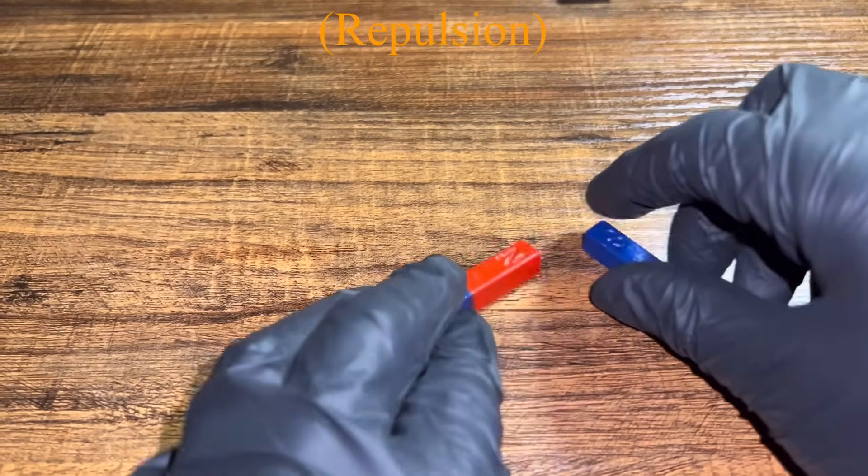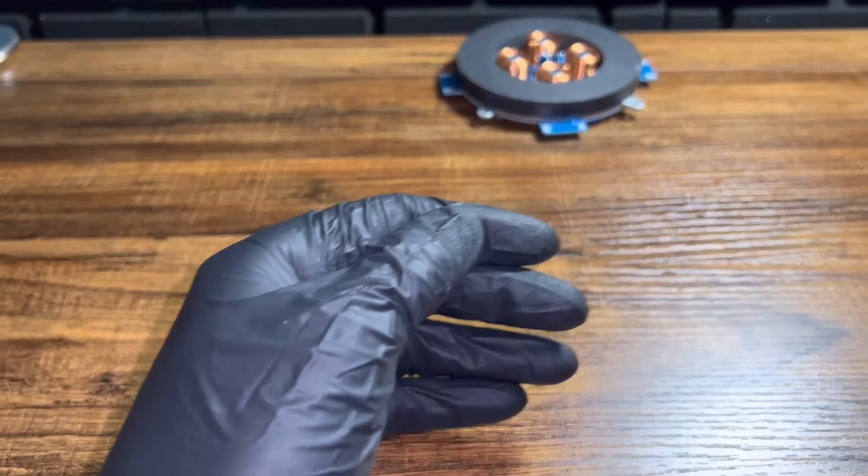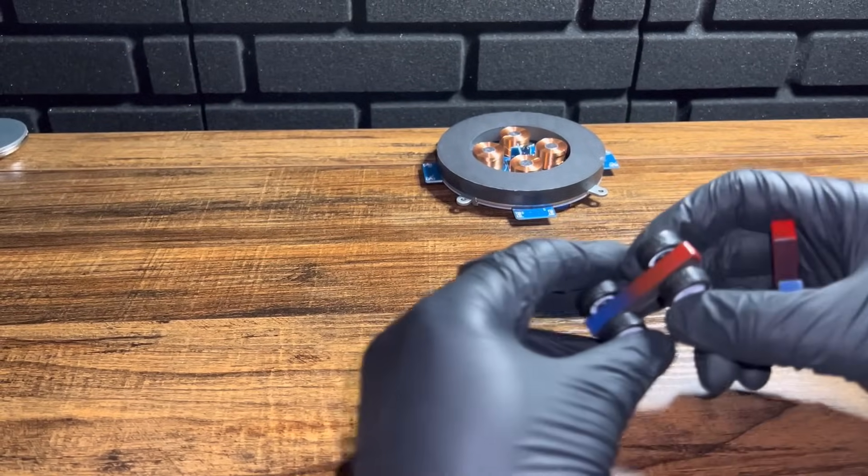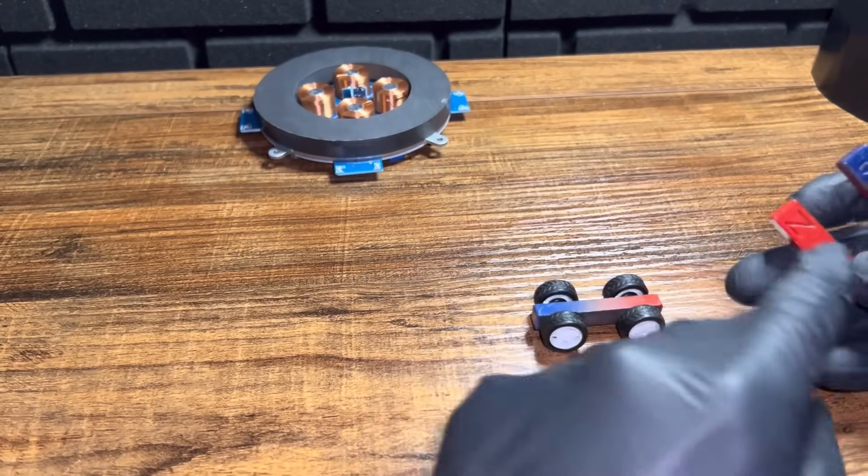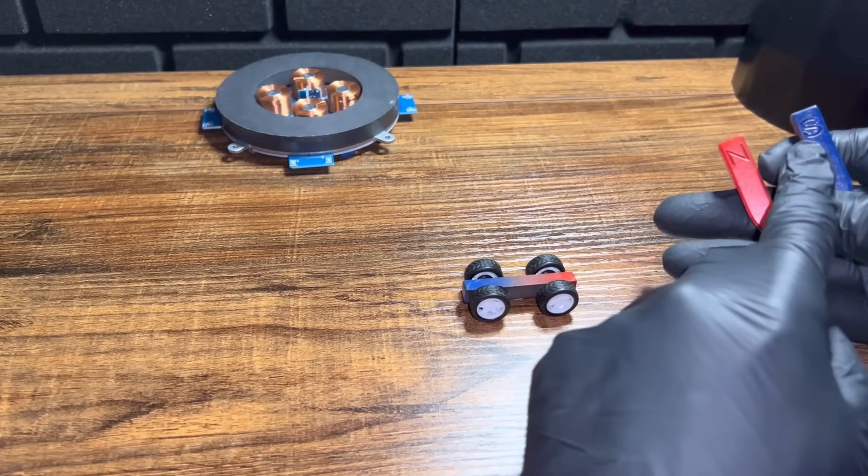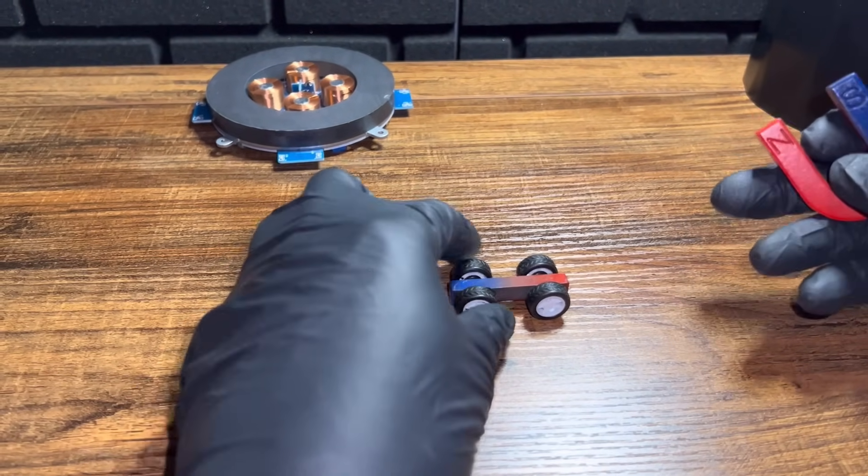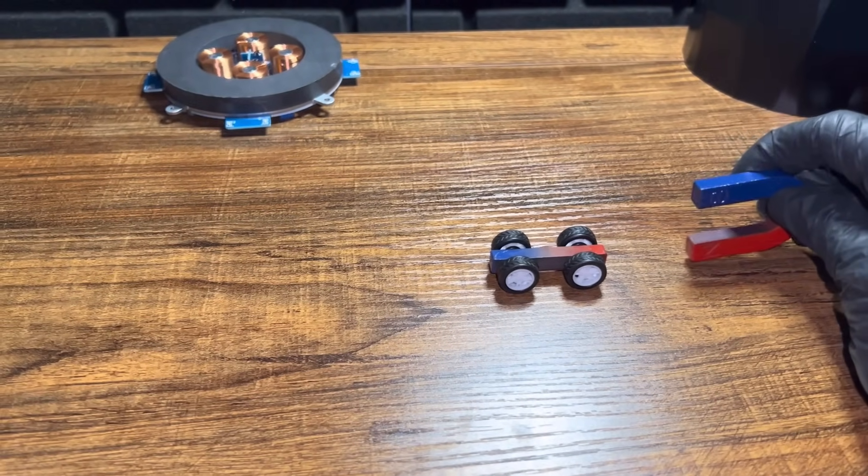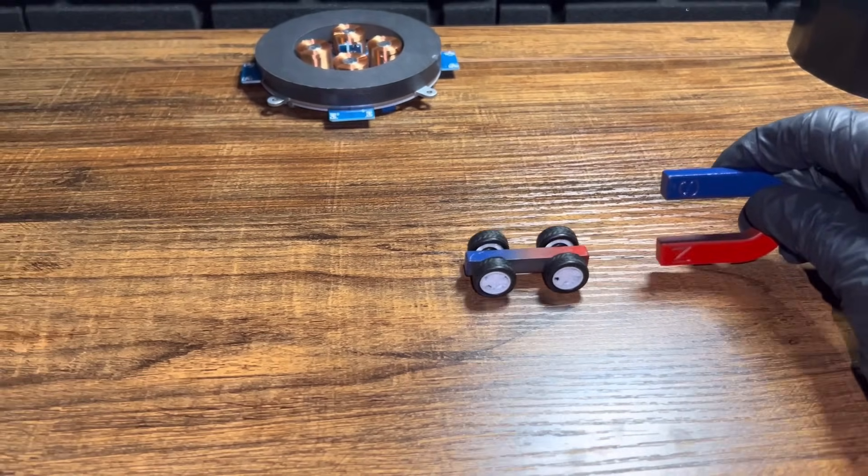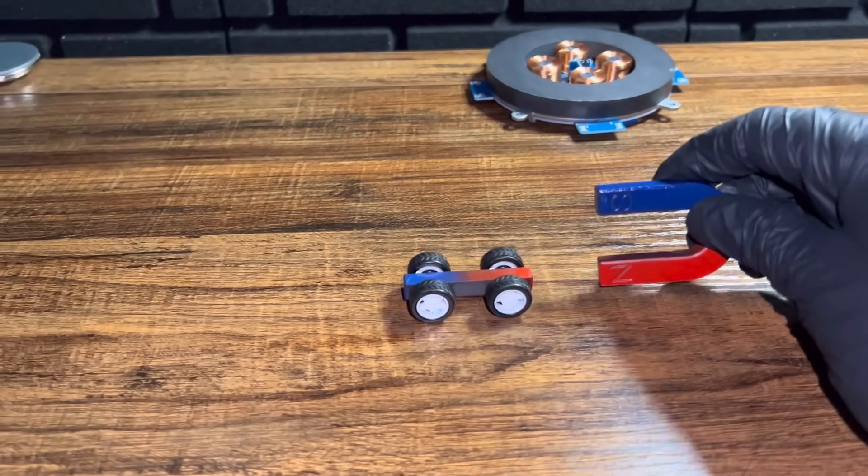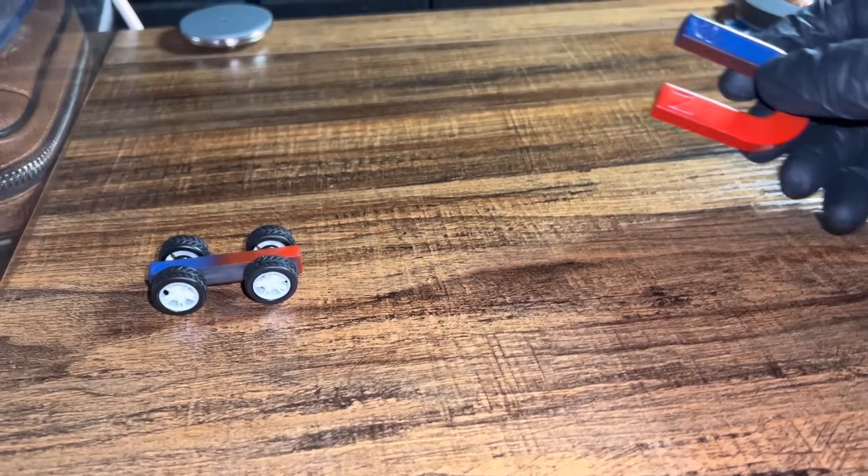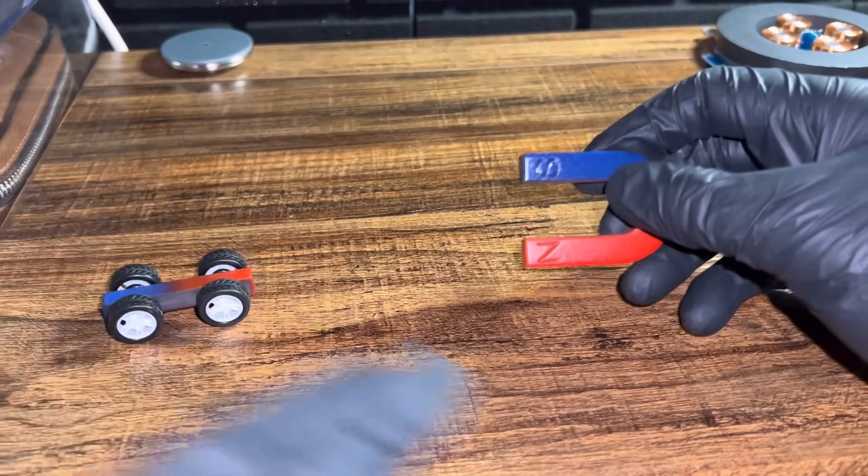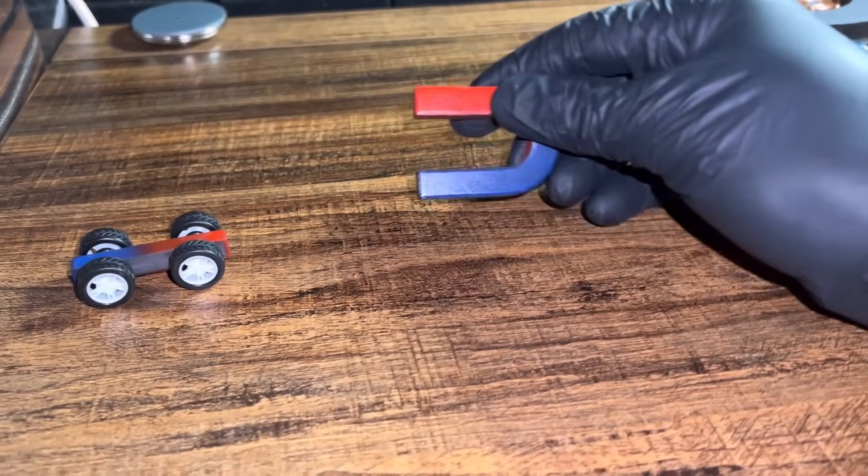See, it'll just flip to try to attract. Alright, let's take this for example. The red indicates north pole, blue indicates south pole. We're gonna do repulsion. If I want to bring it back, I just have to use the south pole.